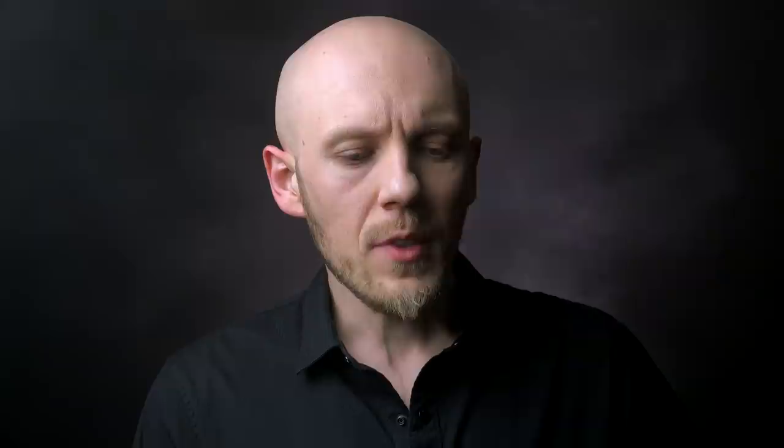To apply the model properly, you have to understand the notion of the center of gravity of a stage. When I say a person or country is at stage orange, it doesn't mean they're 100% orange with no qualities of other stages. Rather, it means they're roughly 50% orange — that's their center of gravity — with about 25% spilling over into green above, and 25% into blue below. Very few people or collective entities are 100% any particular color.